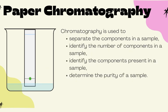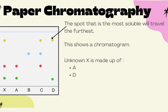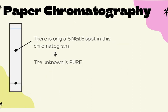When do we use chromatography? When you want to separate components in a mixture, determine how many different components are present, identify them, and check whether a substance is pure. The chromatogram is the product obtained after separation. In this example, unknown X is made up of components D and A. Substance B is a pure substance because it shows only a single spot in the chromatogram, while the rest are mixtures.